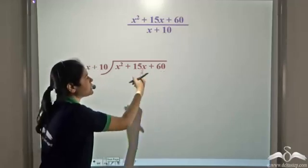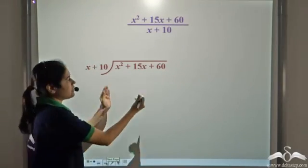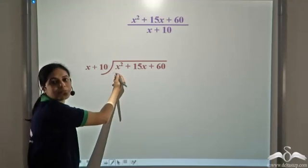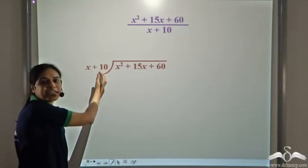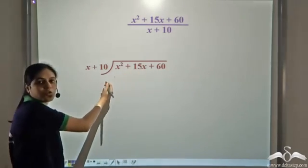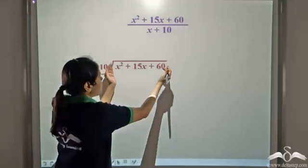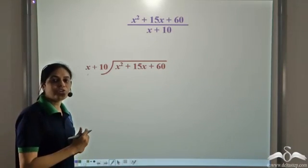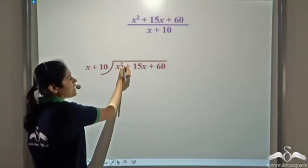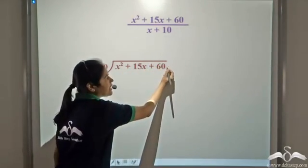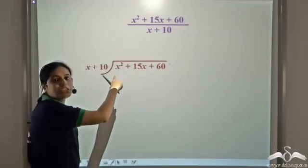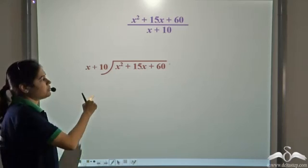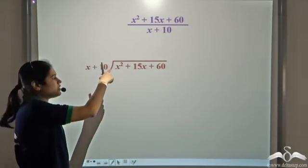So we divide x squared plus 15x plus 60 by x plus 10 using long division. Like in arithmetic, x squared plus 15x plus 60 is the dividend — it is being divided — and x plus 10 is the divisor. Note that we write both expressions in the decreasing order of the power of the variable: power 2, then 1, then 0 for the dividend, and similarly for the divisor.